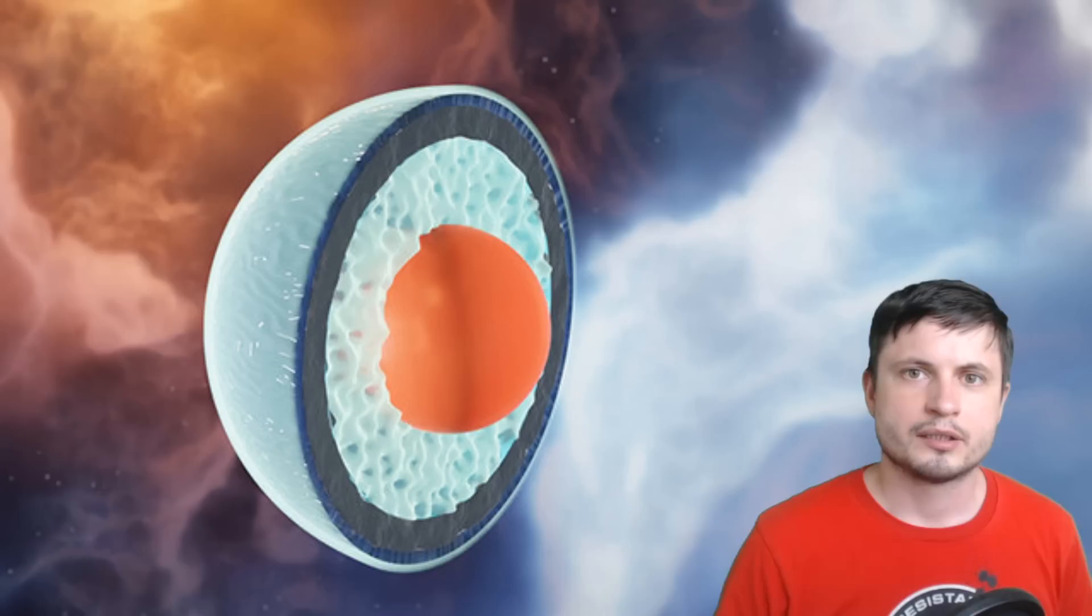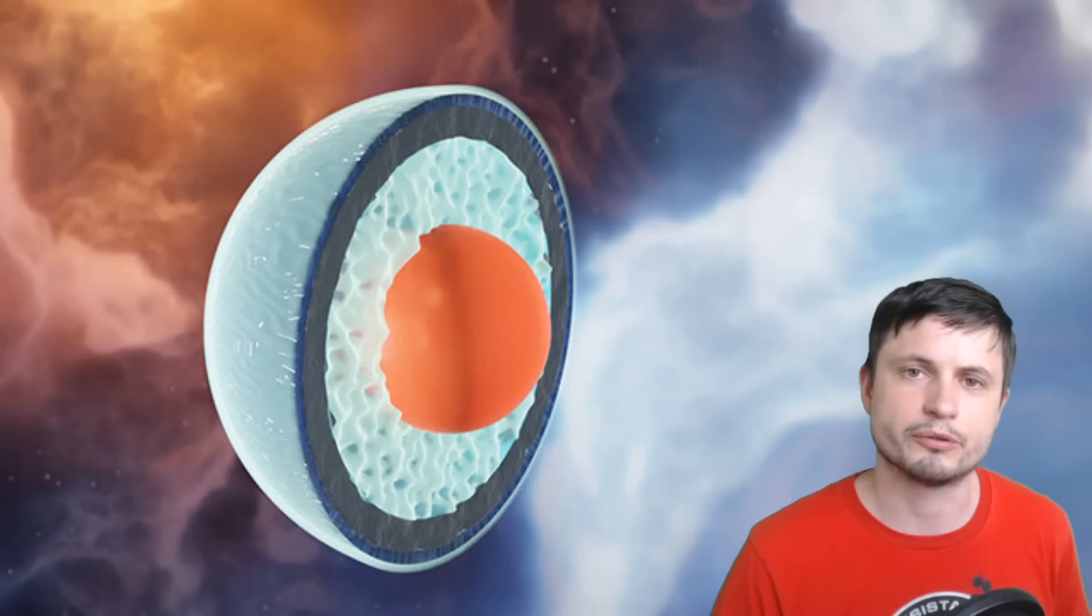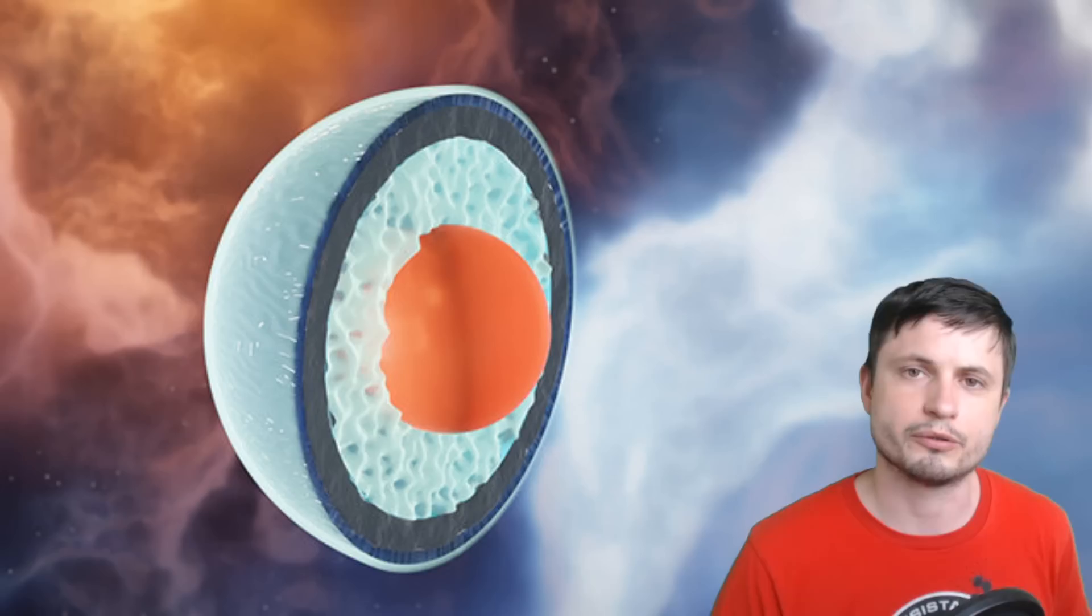But I guess the question is, why does it matter to us, especially if we can never produce this quark matter here on Earth? Well, it turns out that there is actually another theoretical concept known as continent of stability,